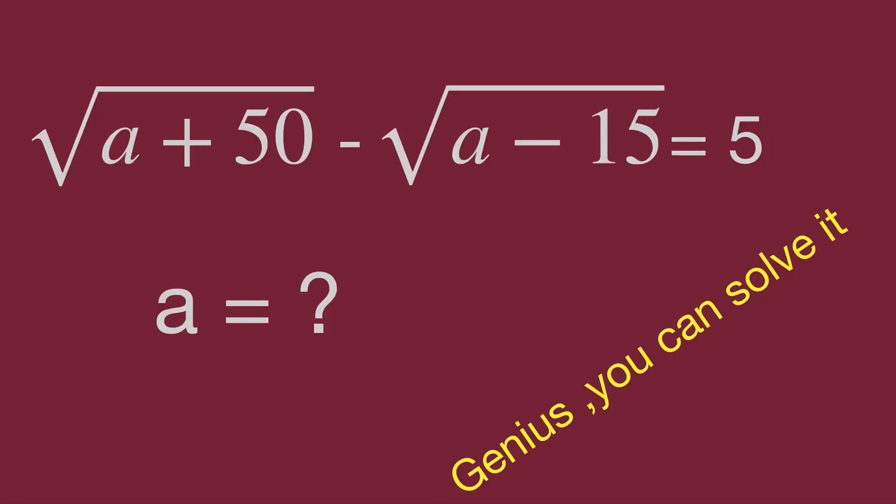Hello, you are watching Balahippo Math Genius Riddle. Here is the question: square root of a plus 50 minus square root of a minus 15 equals 5. Find the value of a.